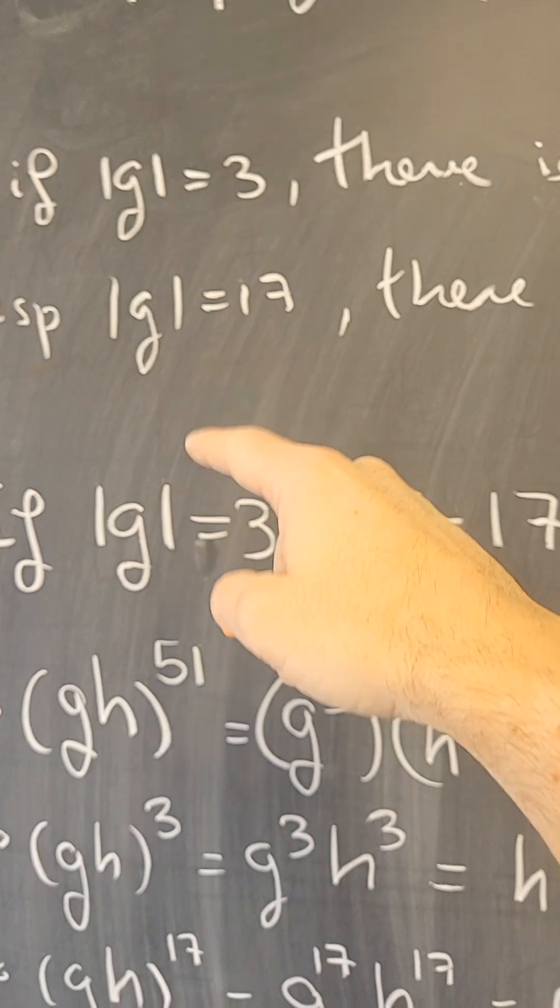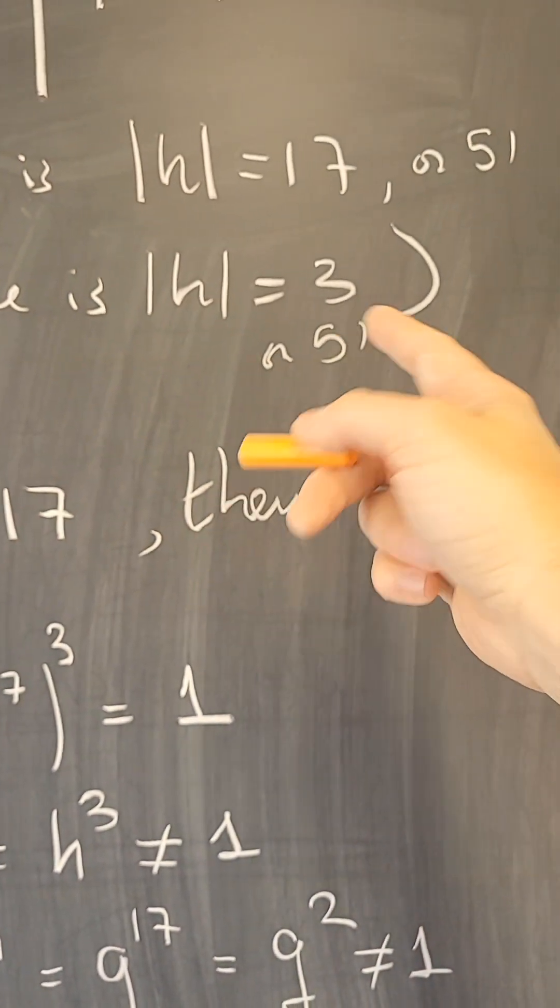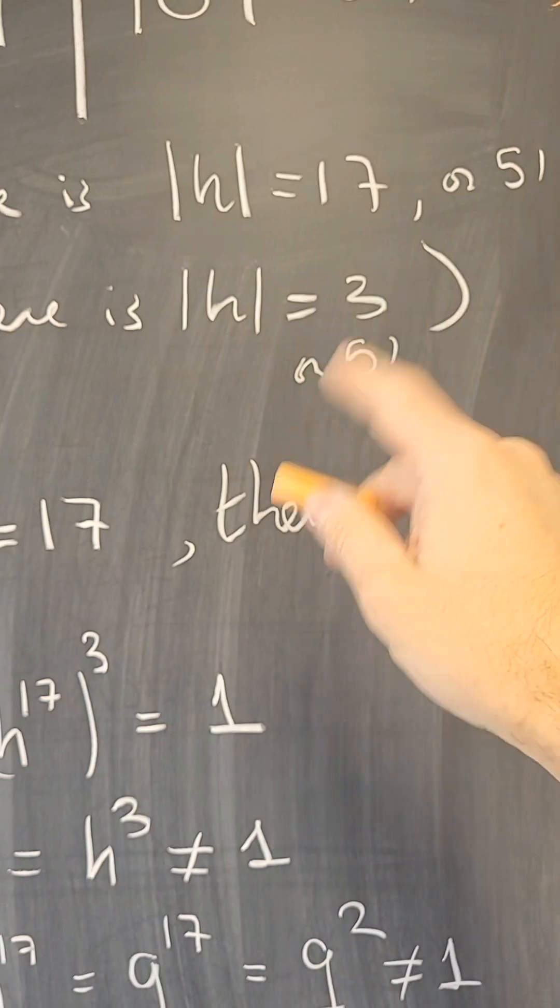Similarly, if g had order 17, then there is an element of order 3 or 51. If it is 51, we are done.